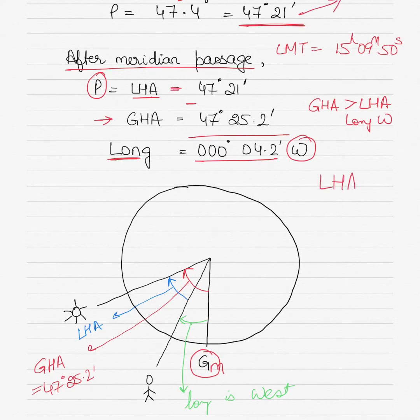If my LHA is between 0 to 180, I call it west. If it is 180 to 360, I call it east. Because my LHA value is 47 degrees 21 minutes, which is between 0 to 180, I call my LHA west.